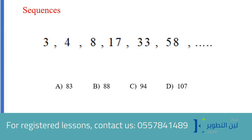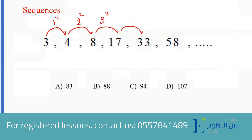Rafa, can you use the mic and tell me why it's 94? From 3 to 4 we add 1, which is 1 squared. From 4 to 8 it's 4, which is 2 squared. From 8 to 17 it's 9, which is 3 squared. And so on — 4 squared, 5 squared, and 6 squared. So the answer is going to be...